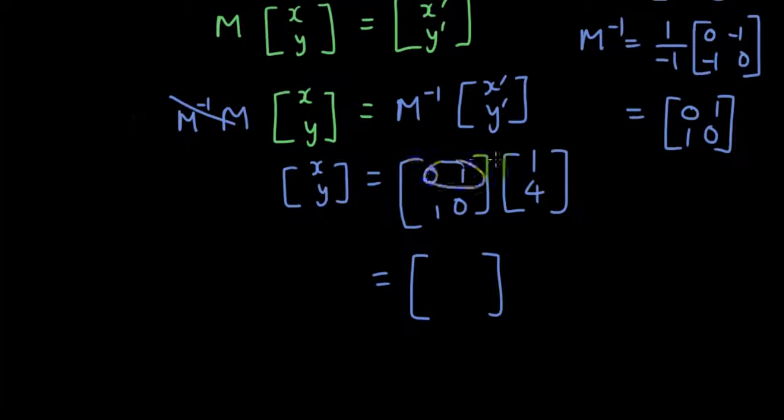And then we multiply it. So first row, first column, we will get 1 times 4 is 4. Second row, first column, so it's 1. And that is the image.